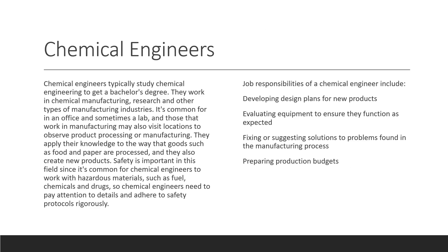Chemical engineers typically study chemical engineering to get a bachelor's degree. Their job responsibilities include developing design plans for new products, evaluating equipment to ensure they function as expected, fixing or suggesting solutions to problems found in the manufacturing process, and preparing production budgets. They tend to work in chemical manufacturing, research, and other types of manufacturing industries.